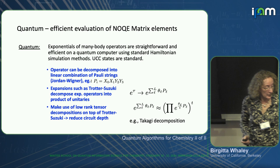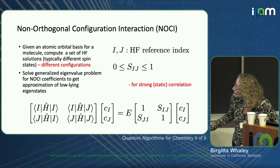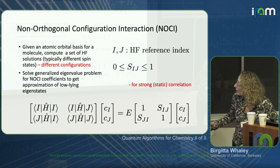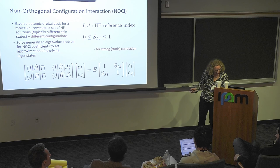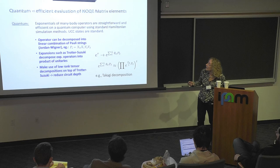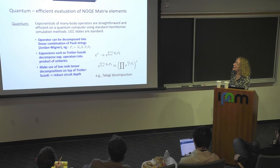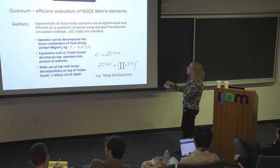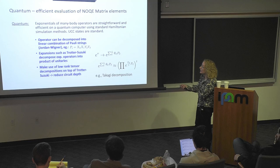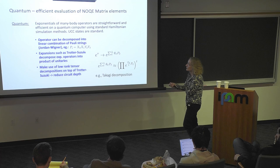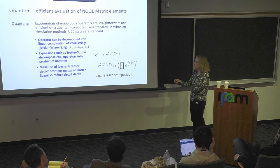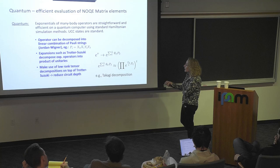Quantum mechanically, there's something you can do. In quantum circuits, it's actually very easy to calculate matrix elements, and one can calculate many of them with relatively few circuits. Calculating matrix elements is basically a question of a linear circuit, which is efficient using standard Hamiltonian simulation methods. You decompose the operator into a linear combination of Pauli strings — using the Jordan-Wigner transformation — then apply the Trotter-Suzuki decomposition to get a product of unitaries.